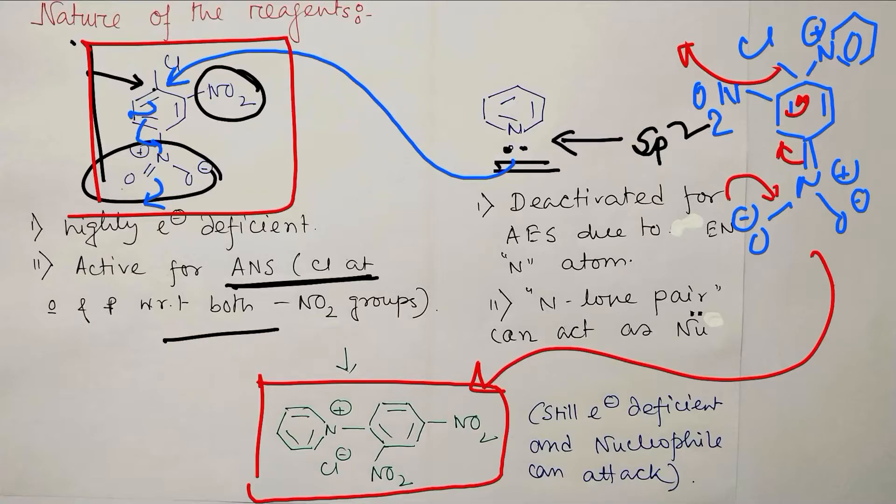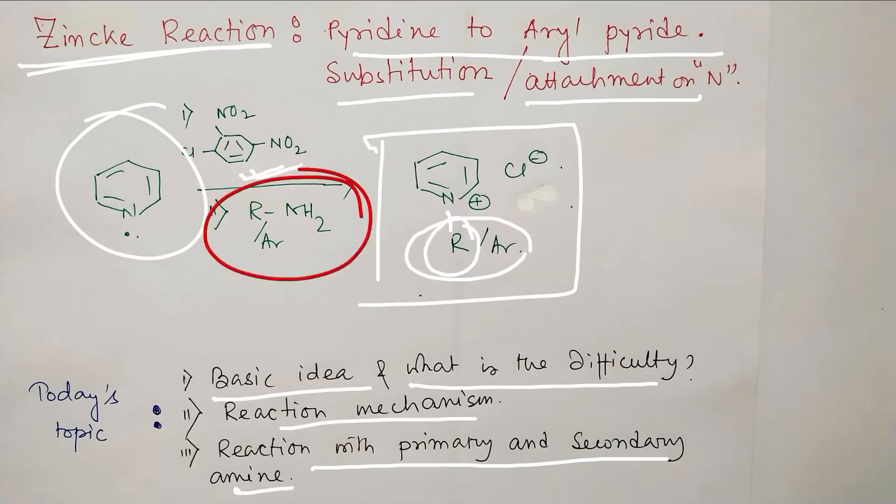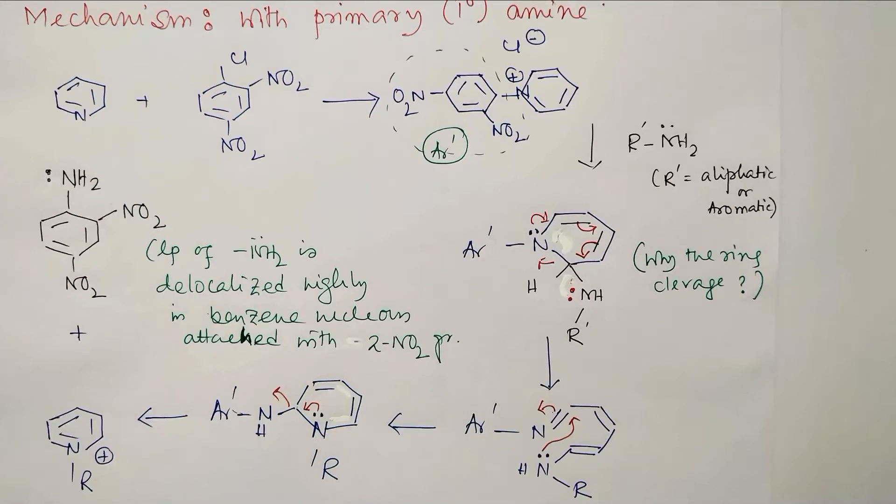So first step we have understood how this is formed. So this is actually the substrate for the next step. Because in this case, just look at this: this pyridine is attached to a benzene attached to 2,4-dinitro, means two nitro groups attached this benzene in ortho-para orientation, which makes this pyridine nucleus also so much electron deficient such that aromatic nucleophilic substitution attack on this pyridine nucleus is possible.